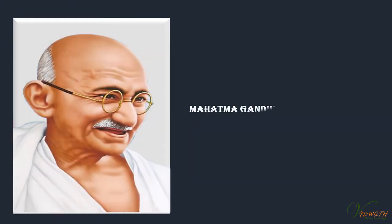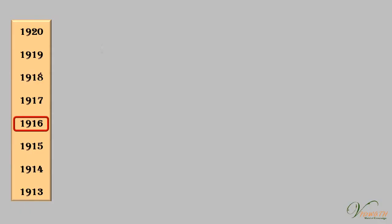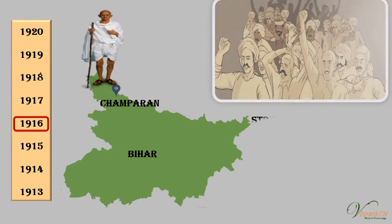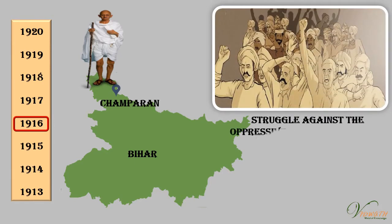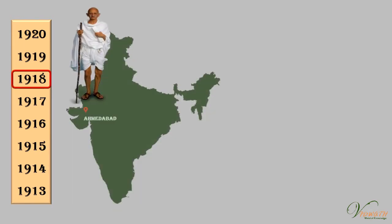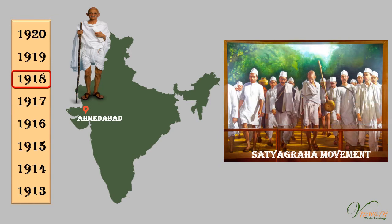Mahatma Gandhi believed that this dharma of non-violence could unite all Indians. In 1916, he travelled to Champaran in Bihar to inspire the peasants to struggle against the oppressive plantation system. In 1918, Mahatma Gandhi went to Ahmedabad to organise a Satyagraha movement amongst cotton mill workers.